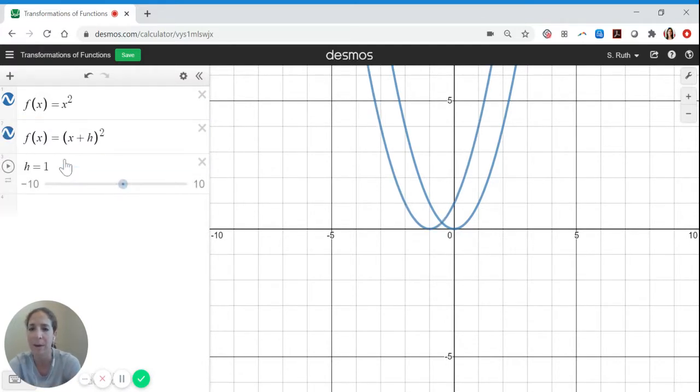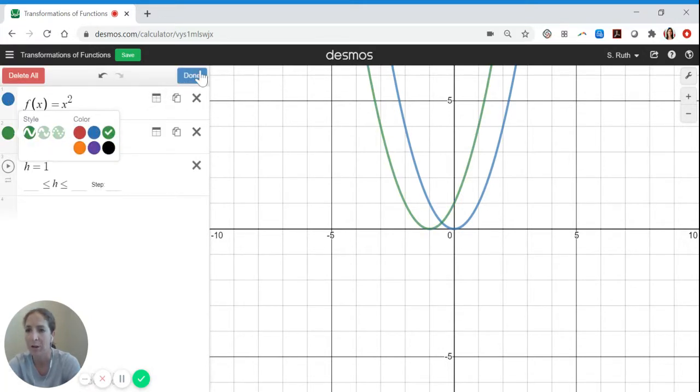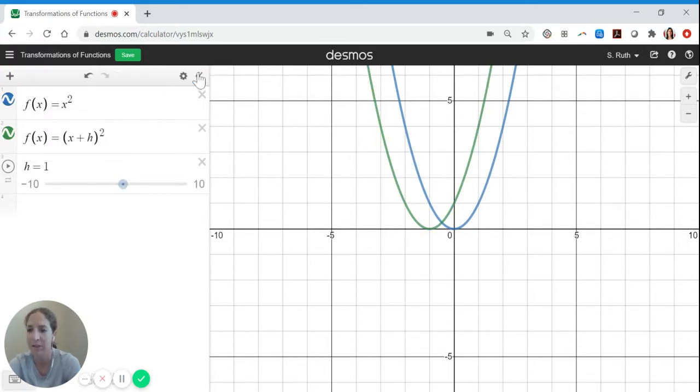But let me go ahead and add that slider. And just like we've done in the past, we can just look at that one change for a wide variety of values of h. So I'm going to show the base graph always in blue throughout today's video, and then the new graph will show in another color. So for our horizontal shift, it's showing in green, and then let's go ahead and play h.